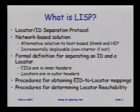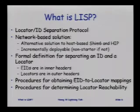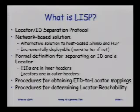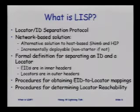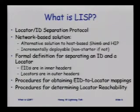LISP stands for Locator ID Separation Protocol. This is going to be a network-based solution. There are host-based solutions that already exist — SHIM6 and HIP are examples of that. We want a network-based solution because we want to incrementally deploy it. We want to change as few routers in the Internet as possible, so it's going to be special boxes that are going to be able to help in splitting the Locator and ID. If it's not incrementally deployable, I think it's a non-starter, and this is some of the reasons why SHIM6 and HIP have not been deployed and they've been around for six to eight years.